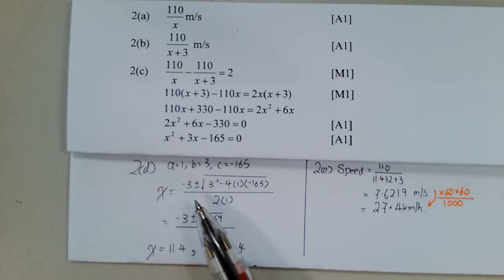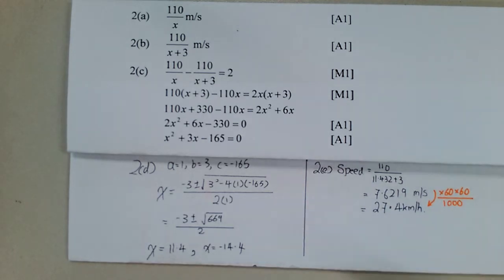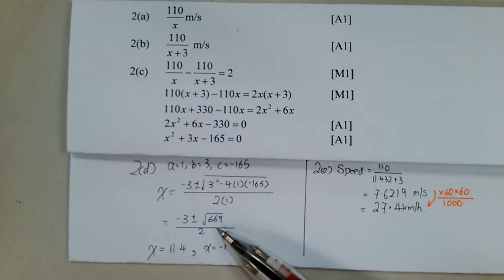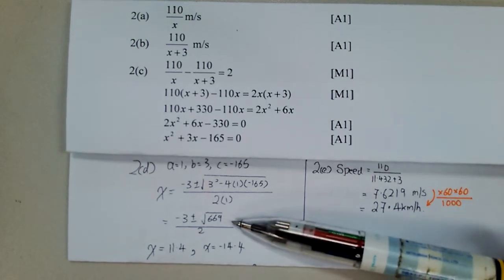You plug into the equation, negative b plus minus square root of b squared minus 4ac over 2a. You get x equals negative 3 plus minus root of 669 over 2. Please take note that this step here is essential. Cambridge actually expects you to write this step. The square root of 669 is actually worth one mark and negative 3 and 2 is also worth another mark in the O-level examinations. Omission of this step will lead to loss of marks. So take note that this is an important step.